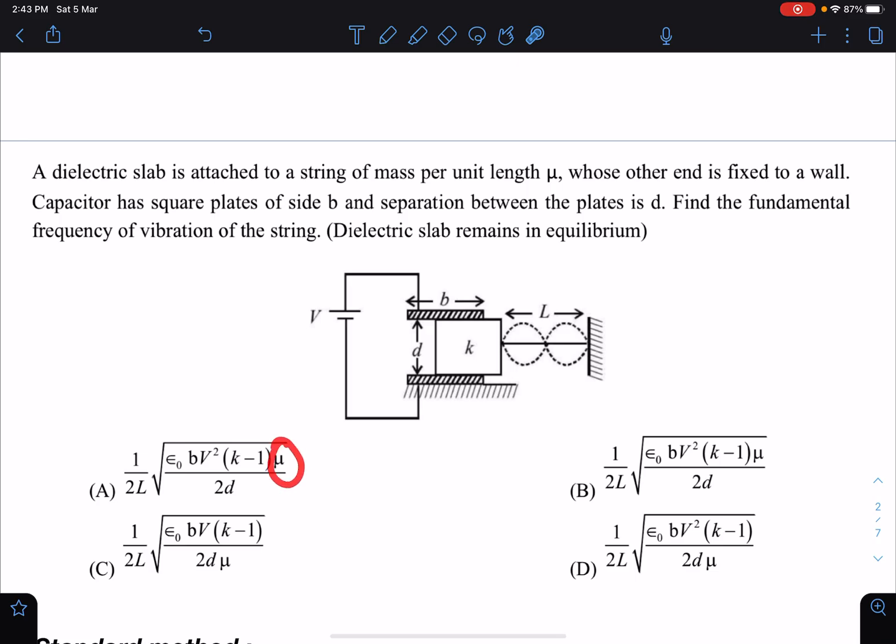While solving problems, just have a look at the four options given. For this particular problem if you see the four options, we know root T by mu kind of thing will come, so this mu is coming in the numerator. So straightaway I can say at least A and B cannot be my answers. Then you will have this expression and this expression, C and D. They are having different dimensions. In fact all A, B, C, D they are having different dimensions, so such kind of problems become very easy to handle.